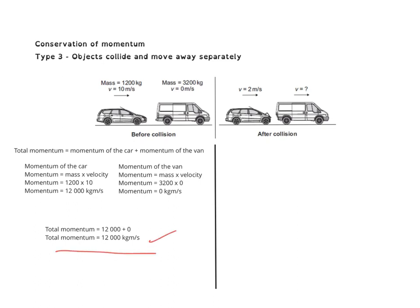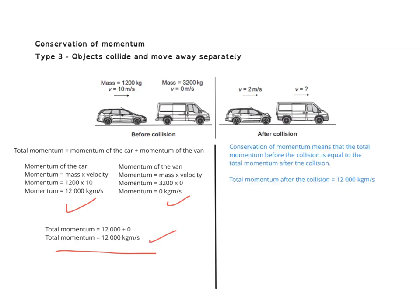That gives us the third mark so far — one mark for working out the momentum of the car and one for the momentum of the van. By conservation of momentum, the total momentum after the collision must also equal 12,000 kilogram metres per second, and that earns you the third mark.